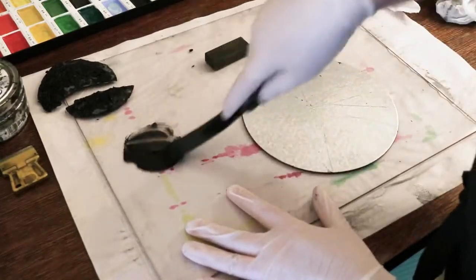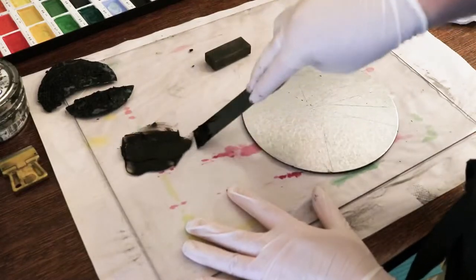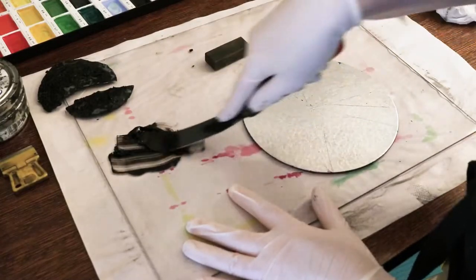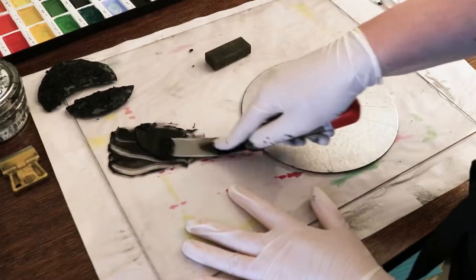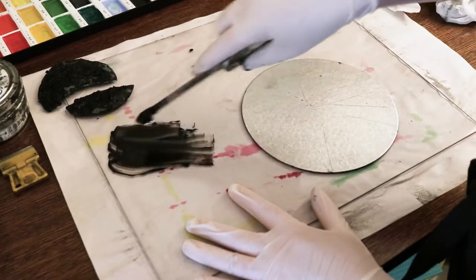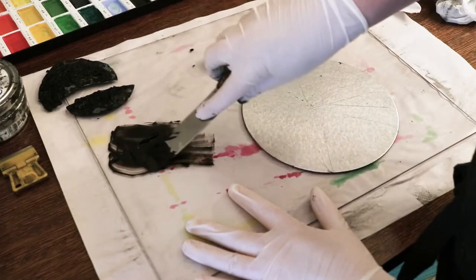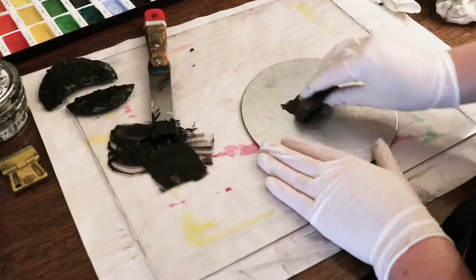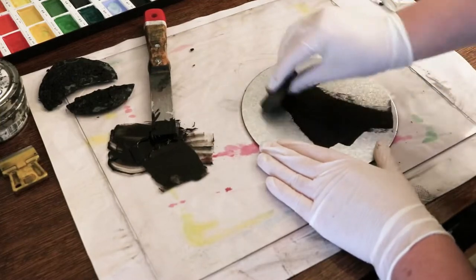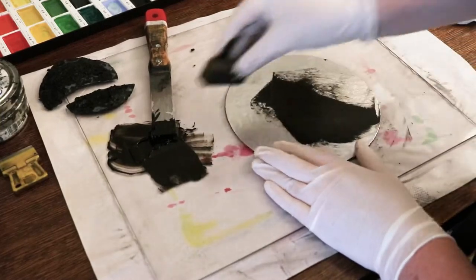To ink up your intaglio plate you'll need etching ink, something like an eraser or a small piece of cardboard to spread the ink across the plate, a piece of tarleton cloth to help push the ink into the grooves and clean the surface of the plate, and some scrap paper to polish the ink off the surface. I also like to use disposable latex gloves when I'm inking up as it can be a pretty messy process.